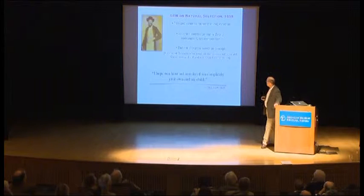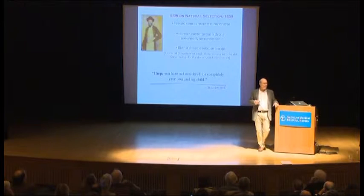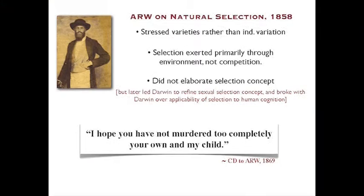This break in 1869 provokes the anguished comment from Darwin in a letter: 'I hope you have not murdered too completely your own and my child.' But this was not a permanent rupture — their relationship was always warm and cordial.